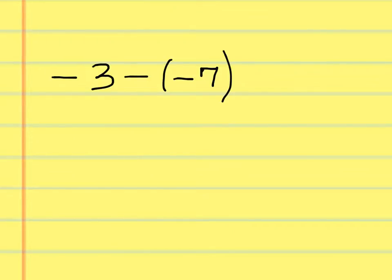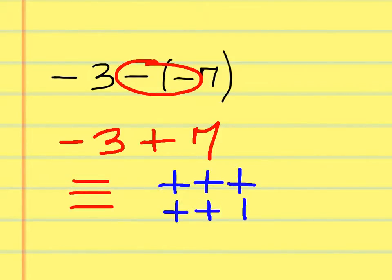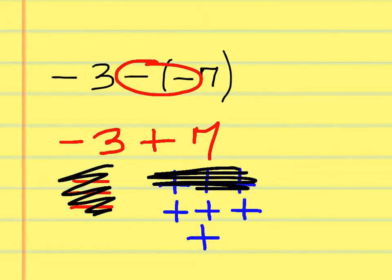What can I trade a double negative out for? A plus, right. So if I have back-to-back signs like this — a double negative — I can make it negative 3 plus 7. Once I do that, I can do 3 negatives and then 7 positives. Cancel out these 3 negatives with these 3 positives, and what am I left with? 4 is right.